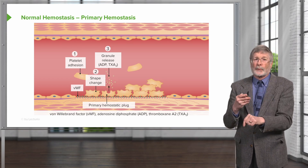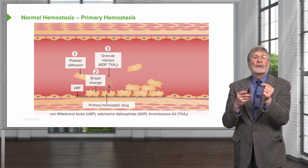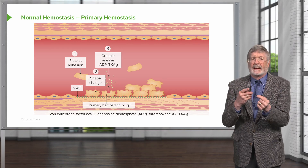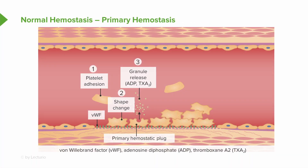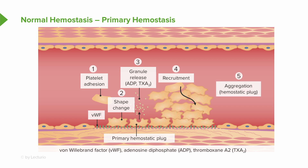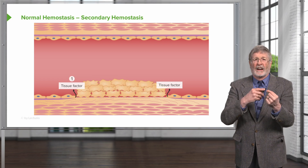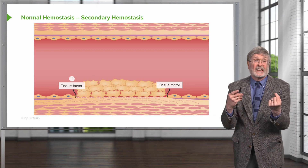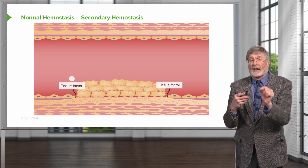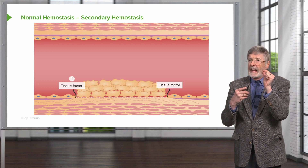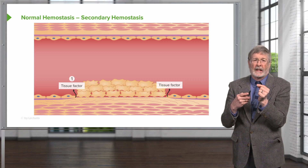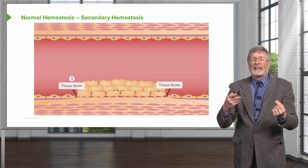That happens through the granule release. The granules being released include adenosine diphosphate (ADP) and thromboxane A2. Those released components — ADP and thromboxane A2 — will lead to the secondary recruitment of additional platelets, giving us our definitive hemostatic plug. Building that definitive hemostatic plug will also activate additional factors, the coagulation cascade. Endothelial cell injury has led to the production of tissue factor, which is released into our forming hemostatic plug.